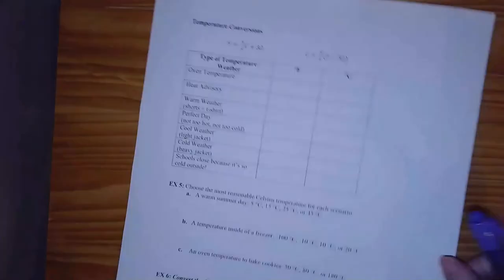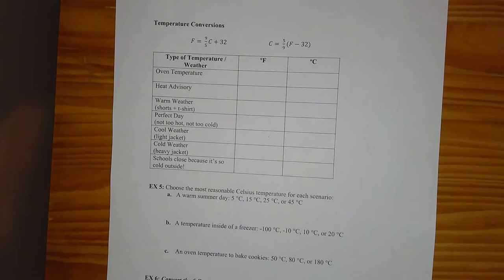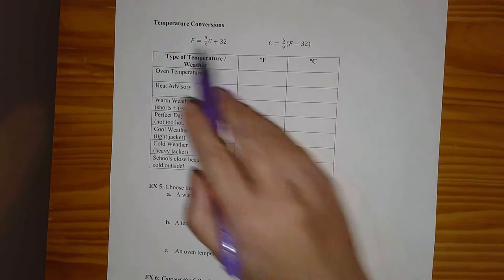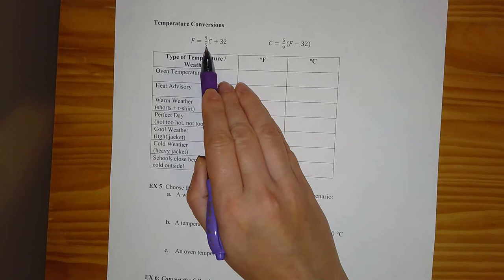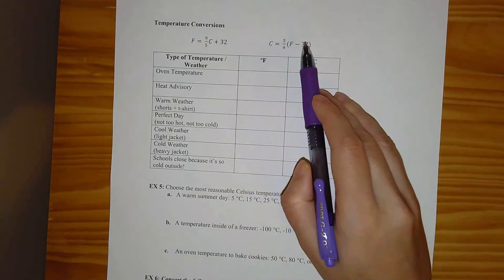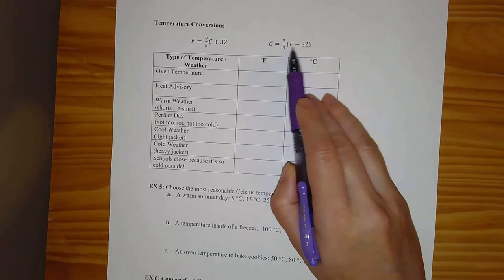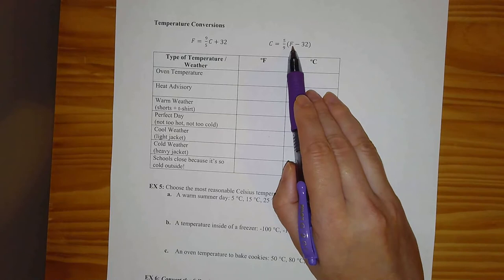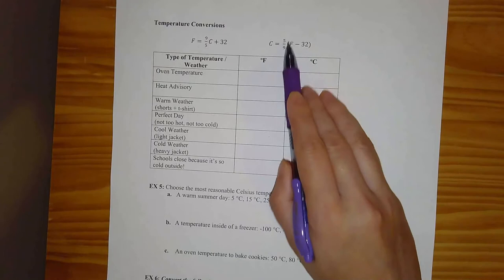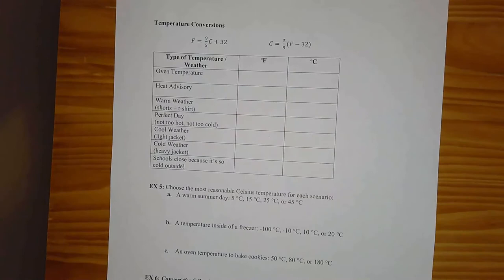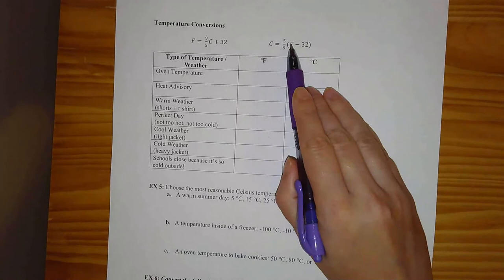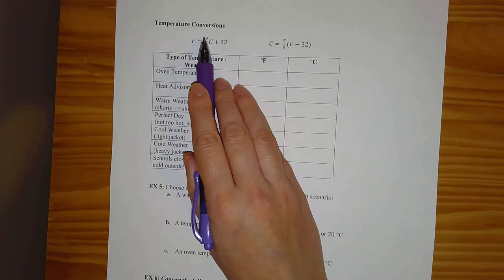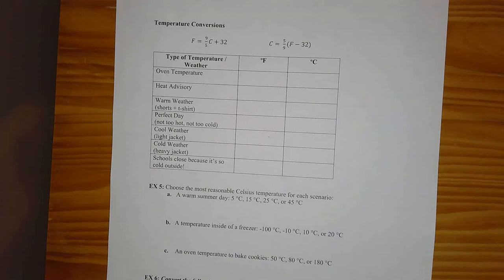Next up is temperature conversions. There are two major temperature units we'll look at: Fahrenheit and Celsius. I've got the equations set up both ways. The temperature in Fahrenheit equals 9-fifths times the temperature in Celsius plus 32. Or going the other direction, the temperature in Celsius equals 5-ninths times the quantity Fahrenheit minus 32. Remember order of operations — you subtract 32 first, then multiply by 5-ninths. When multiplying by one of these fractions, you're really multiplying by the numerator and dividing by the denominator: 5-ninths means multiply by 5 and divide by 9; 9-fifths means multiply by 9 and divide by 5.